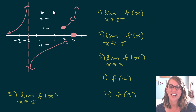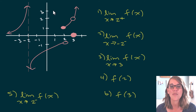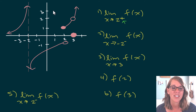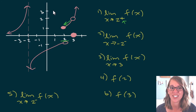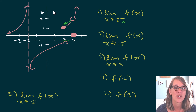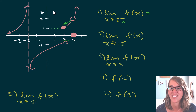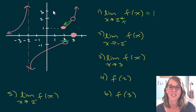For the first one — the limit as x approaches 2 from the right, that's what this plus sign means. Here's 2, and jumping on my graph from the right, I end up at that closed circle which lines up with the y value of 1. So that first answer is 1.